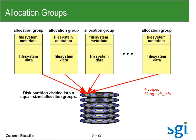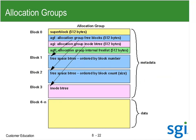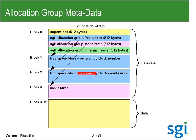If I spread those four files each into their own allocation group, I decouple the metadata and all four can grow concurrently. More allocation groups allows more concurrent metadata changes, assuming the distribution gets me to a different allocation group. At the top of each allocation group is the metadata — super block, allocation group free blocks, and an allocation group inode B-tree. A B-tree is a search algorithm. We also have two B-trees for free space: one by block number and one by block size.